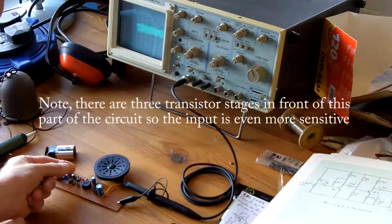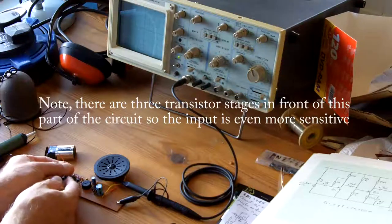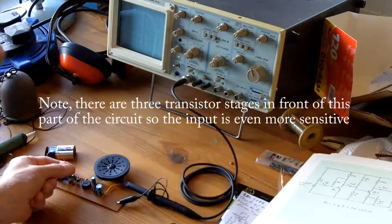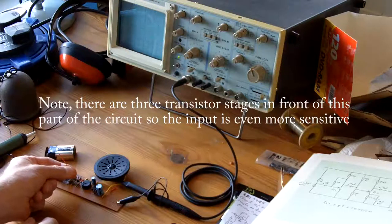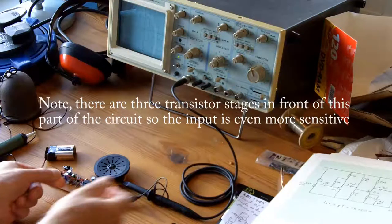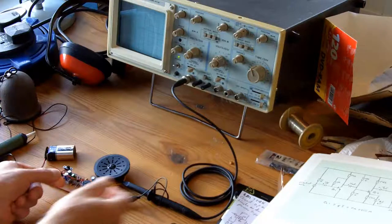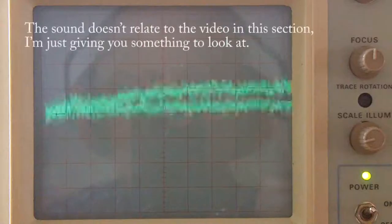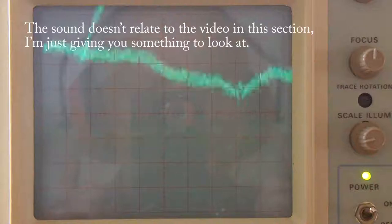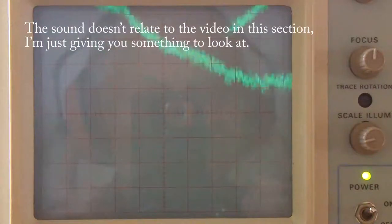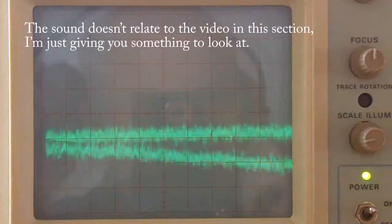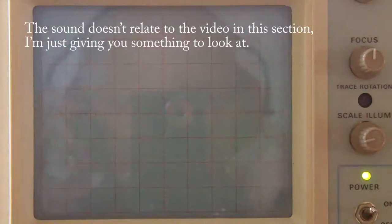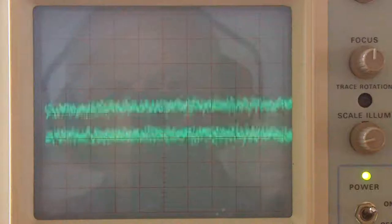And all I'm doing is holding the input to this operational amplifier, this op-amp, on the output. To give you an idea of how sensitive the amplifier is, I can easily detect a pin being dropped from about two or three inches onto a carpet, and that's with the microphone about two feet away from where I'm dropping the pin.